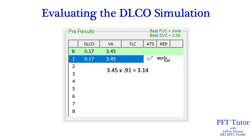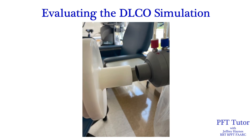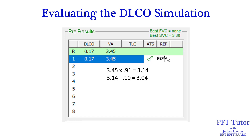However, it's still not really close to 3 liters. Remember that even though we are performing this simulation without a hose or filter attached to the syringe, there is still some dead space in the syringe that needs to be accounted for. For this syringe, the dead space is 100 mL. So if we go back and subtract an additional 100 mL for the syringe dead space, the simulated VA is now 3.04 liters — very close to the 3-liter target.